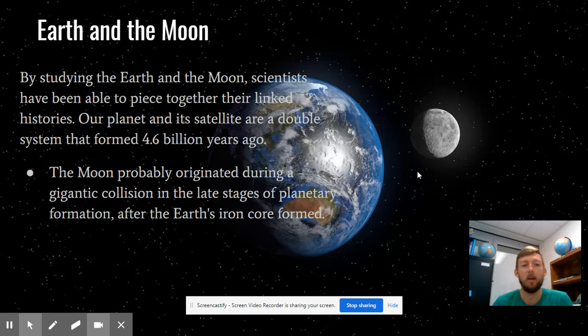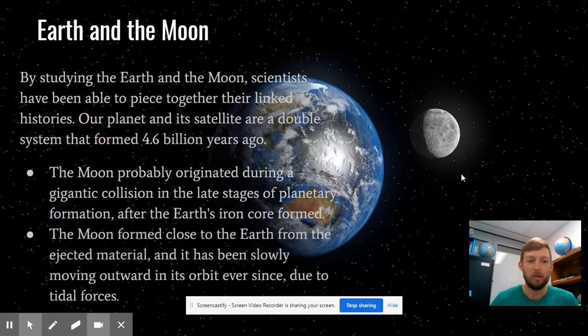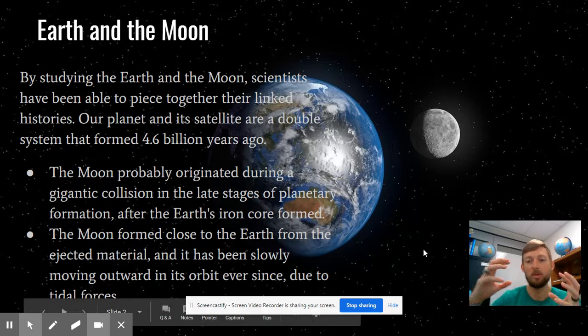The moon probably came from some gigantic collision, but there are some other options, and we'll talk about those here in just a minute. But that collision would have formed just after the Earth's iron core formed. So the moon formed close to the Earth. And during this collision, there would have been, like if you throw something in dirt, you see the dirt fly up. And so it would have been that ejected material that then formed with gravity to then form the moon. And the moon's orbit has been slowly getting further and further away from the Earth due to tidal forces, which is the forces that we have on each other through gravity.